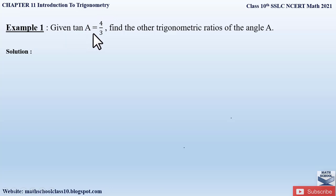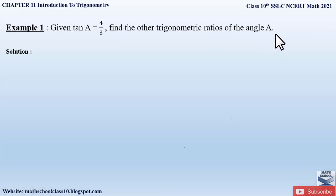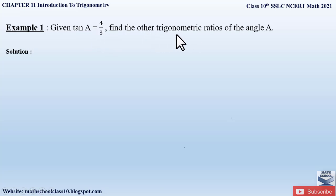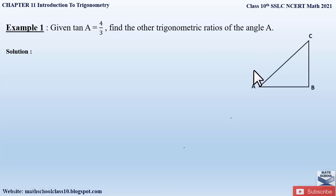Example 1 from Chapter 11 Introduction to Trigonometry says: given tan A equal to 4 by 3, find the other trigonometric ratios of angle A. They have given us the value of a trigonometric ratio — tan A is equal to 4 by 3 — and we have to find all the other trigonometric ratios for angle A.